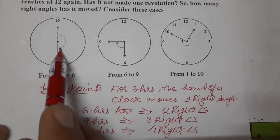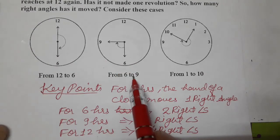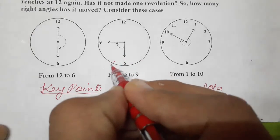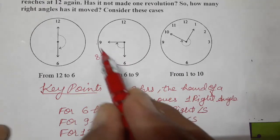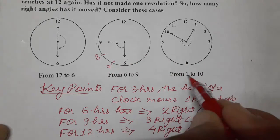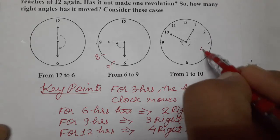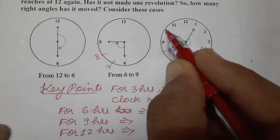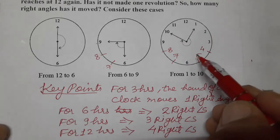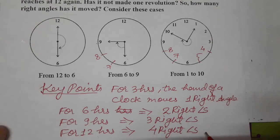So from twelve to six, how many hours are there? Six hours. So how many right angles? Two right angles. From six to nine, how many hours? Three hours. So three hours means one right angle. And from one to ten — counting gives nine hours. For nine hours, how many right angles? Three right angles.